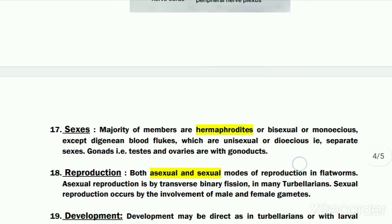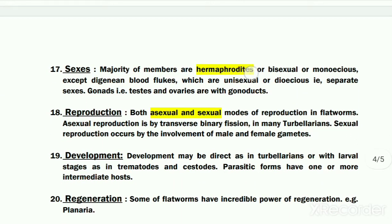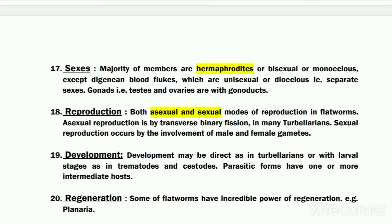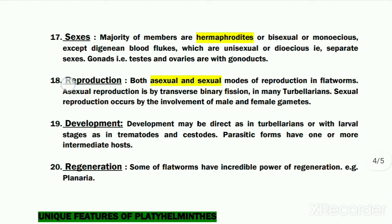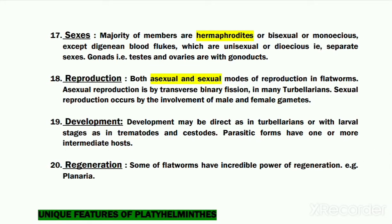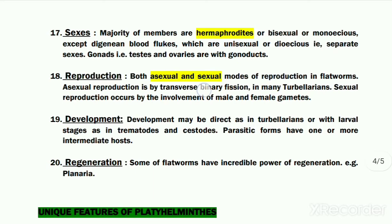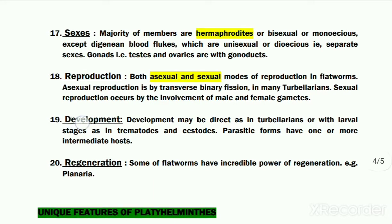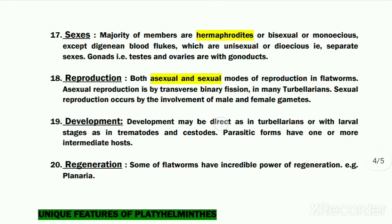Most flat worms are hermaphrodite organisms, meaning both male and female reproductive organs are present in the body of one organism. However, few species, especially belonging to class Turbellaria, are unisexual as well. Regarding mode of reproduction, most flat worms exhibit sexual reproduction involving male and female gametes. However, few members belonging to class Turbellaria also exhibit asexual reproduction by transverse binary fission.